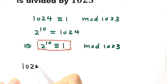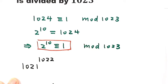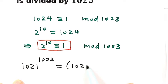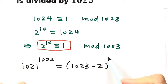We have 1021 to the power of 1022. Since the question asks for the remainder when this number is divided by 1023, we're going to rewrite 1021 as 1023 minus 2, then to the power of 1022.